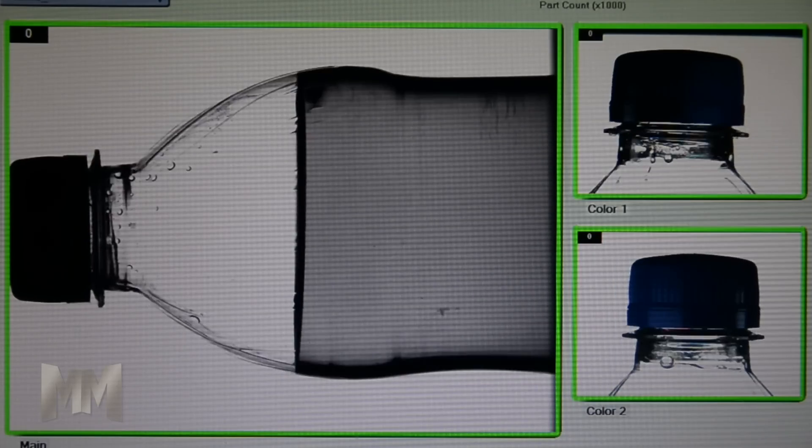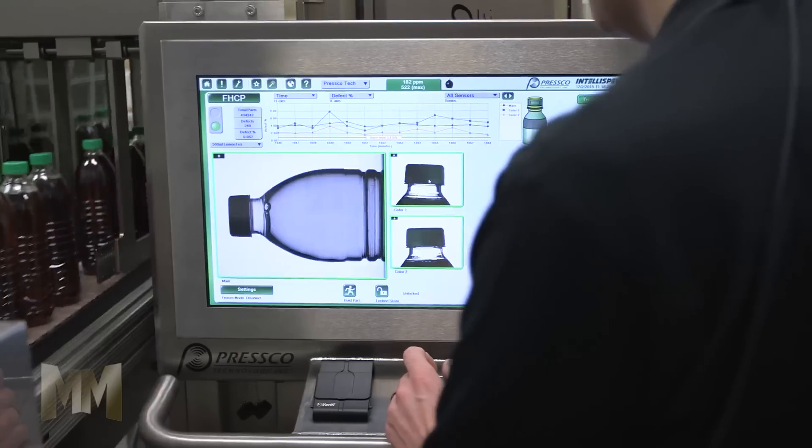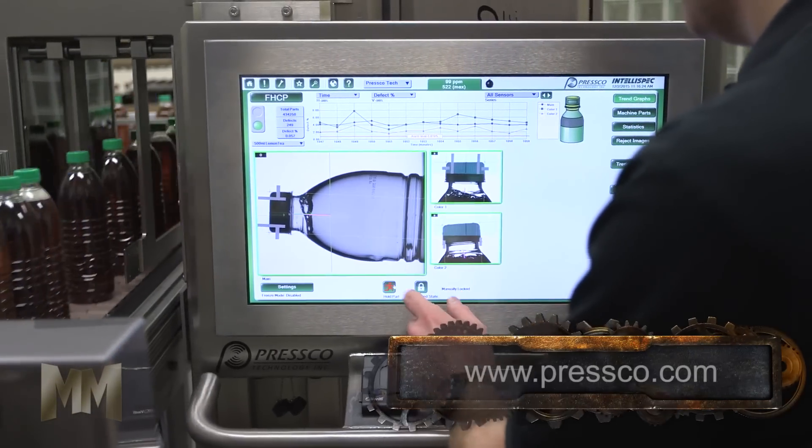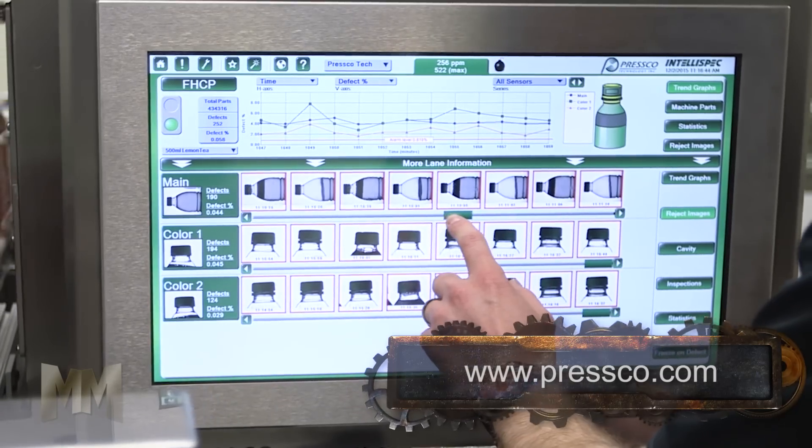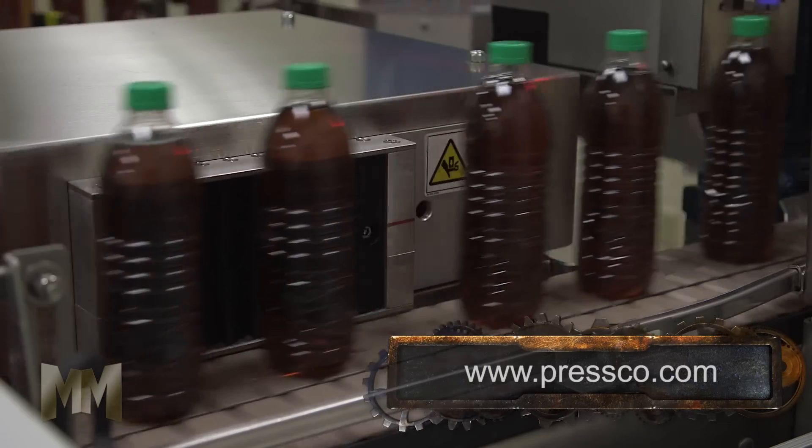Each IntelliSpec contains proprietary software capable of inspecting over 50 parts per second. The interface is graphically intuitive, allowing manufacturers to easily adjust parameters, analyze trends, and keep their processes running smoothly.